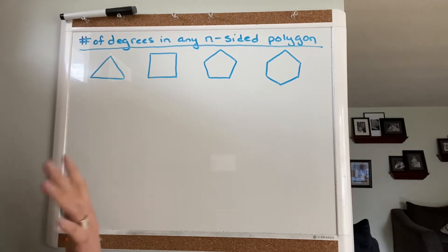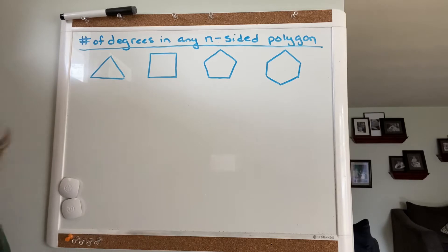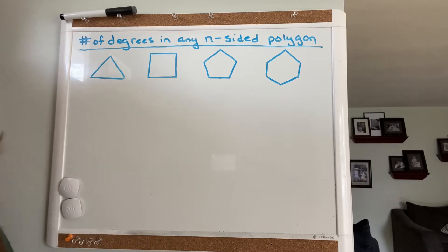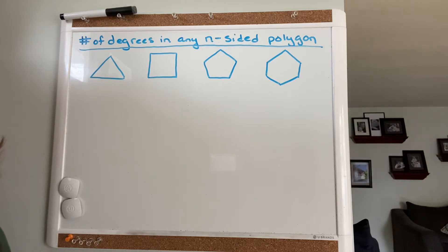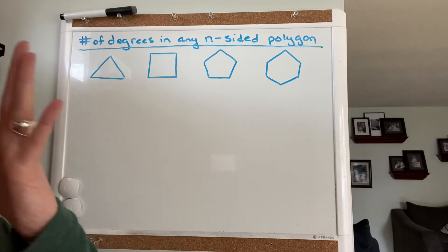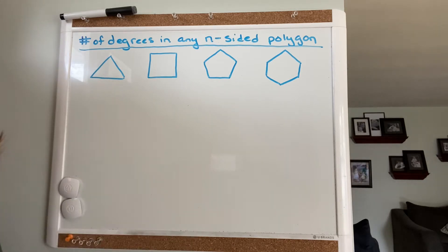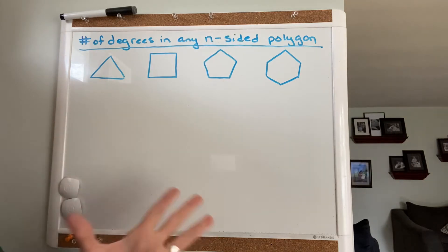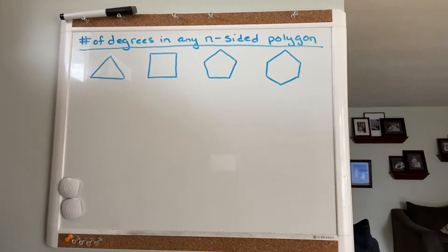Math 10. One of the things you're going to have to do is find the total number of degrees in a given polygon. If I asked you how many degrees are there in a 20-sided polygon, you would have to be able to compute that. So right now we're going to derive a formula that you can use to find the number of degrees in any polygon with n sides.